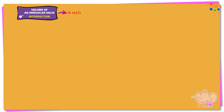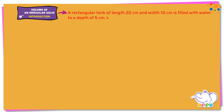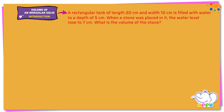A rectangular tank of length 20 centimeters and width 10 centimeters is filled with water to a depth of 5 centimeters. When a stone was placed in it, the water level rose to 7 centimeters. What is the volume of the stone?